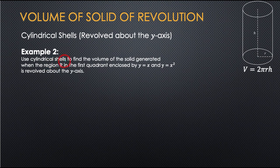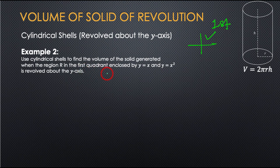Use cylindrical shells to find the volume of the solid generated when the region in the first quadrant enclosed by y = x and y = x² is revolved about the y-axis.